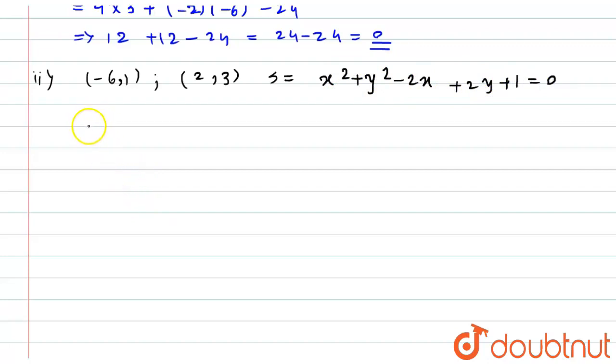So for this, the condition of conjugate is that is, this implies x₁ into x₂ plus y₁ into y₂ plus g/2 into (x₁ + x₂) plus f/2 into (y₁ + y₂) plus c. So this value should be equal to 0.